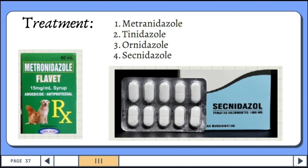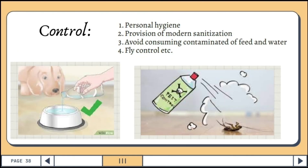Metronidazole is an antibiotic used to treat a wide variety of infections. Tinidazole is used against protozoan infections and treatment for a variety of anaerobic, amoebic, and bacterial infections. Control measures include personal hygiene, provision of modern sanitation, avoiding contaminated food and water, and fly control.